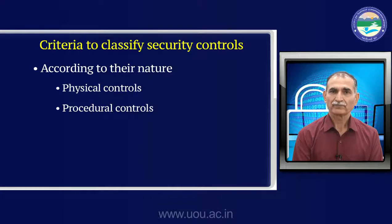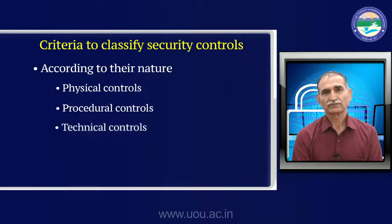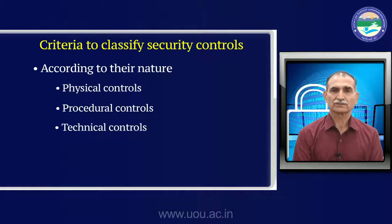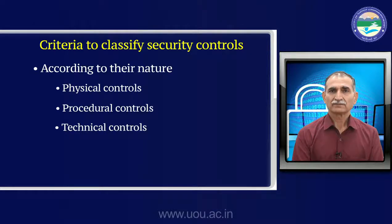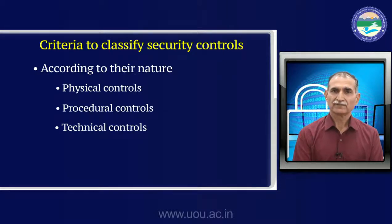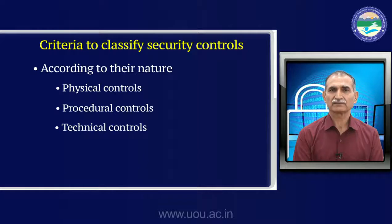Now coming to technical controls — technical methods to ensure that security procedures are implemented. Technical controls include, for example, username and password. We implement this using Active Directory, and when using Linux and Unix methods we use LDAP — Lightweight Directory Access Protocol. Other technical methods include biometric attendance, iris scan, and newer technologies like palm vein scan.